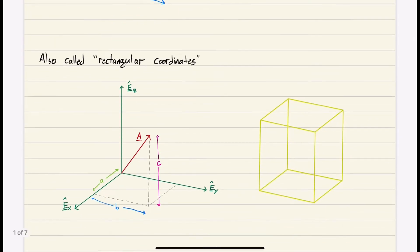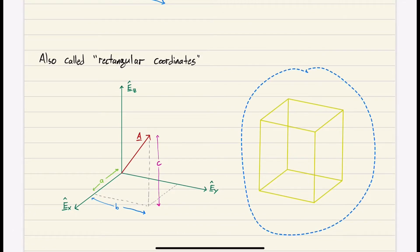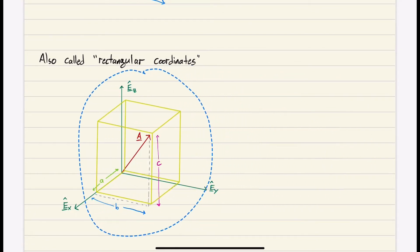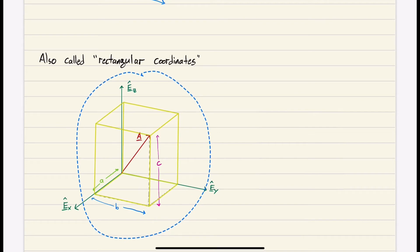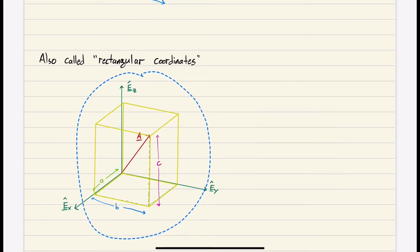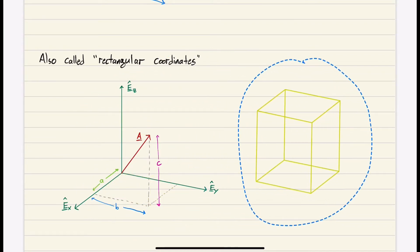These are also called rectangular coordinates, because if you draw a rectangle and lay it on top, you move along the edges of the rectangle — you're moving in a rectangular pattern to define our vector.